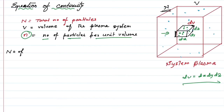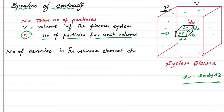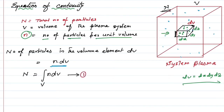So the number of particles in the volume element dv is given by n times dv. The total number of particles N can be obtained by integrating over the full volume V, so N equals the volume integral of n dv. Let us call this equation number one.